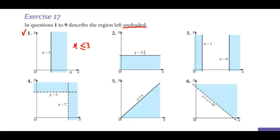In this next one, this black line equation is y is equal to 2.5, and the unshaded region is on the top of the line. Because the unshaded region is on the upward side, y is greater than. The values of y keep on increasing on the upper side, so it will be greater than equal to 2.5.